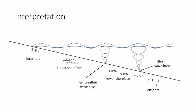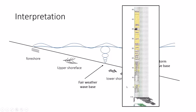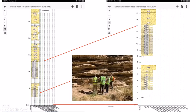Returning to interpretation: we have offshore bioturbated sediments overlain by hummocky cross-stratified lower shoreface, then cross-bedded upper shoreface and foreshore, sometimes with a bar migrating across — giving a middle shoreface in some sections. The completed vertical section has to be condensed to fit on screen, so detail isn't visible at full scale. Focusing on the lower part of the section, we see a lot of interbedded packages and an expanded section that looks different from the amalgamated section at the top.